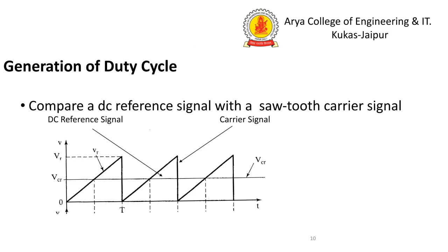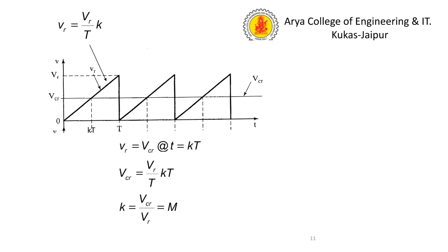Generation of duty cycle is achieved by comparing a DC reference signal with a sawtooth carrier signal. The triangular wave is the carrier signal, and Vcr is the DC reference signal. The duty cycle K is determined by the ratio of the reference voltage Vr to the peak of the carrier signal.